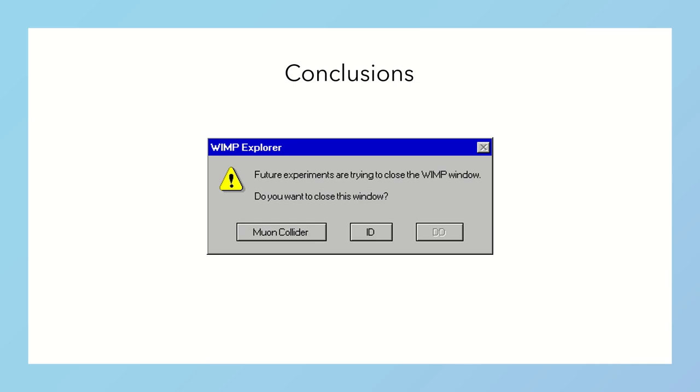In conclusion, we have computed for the first time the thermal masses for all scalar and fermionic real WIMP candidates below the unitarity limit and studied the exclusion or detection possibilities in future experiments.